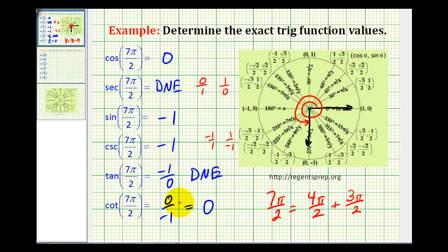And now we have all six trig function values for our angle, 7π/2 radians.